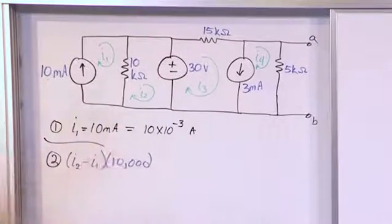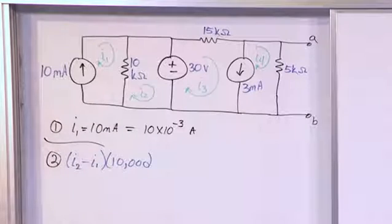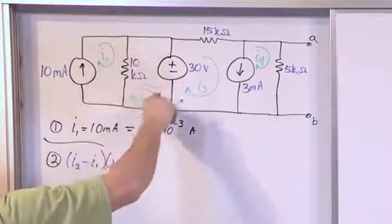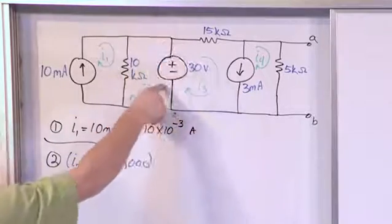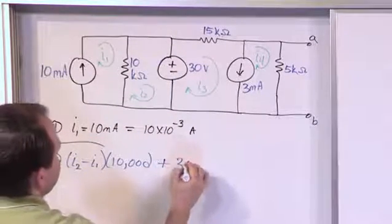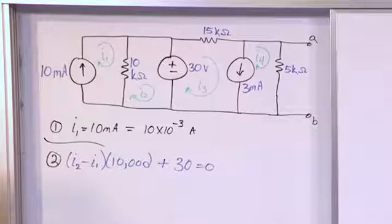So I always convert it to ohms when I'm doing my equations. And then at the end of the day I get what I get and then I can convert back. So this is the voltage drop across the 10 kiloohm resistor. Now let's circle around going through the source from positive to negative. That's a voltage drop. So it's plus 30. And that is it for that mesh, ladies and gentlemen, because there's nothing else there.